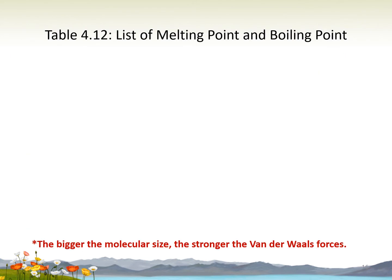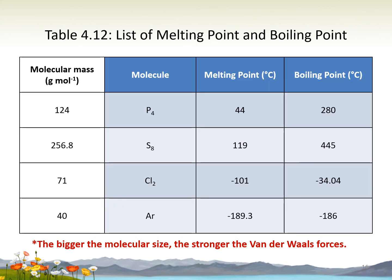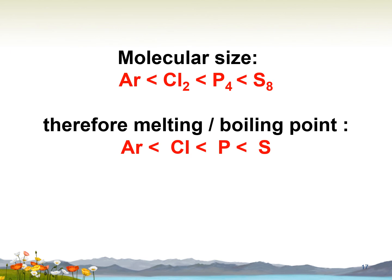The strength of Van der Waals forces depends on molecular size — the bigger the molecular size, the stronger the Van der Waals forces. Molecular size is determined by molecular mass. From the table, sulfur (S8) has the highest molecular mass and therefore the strongest Van der Waals forces, giving it the highest melting and boiling point. The molecular size increases in the order: Ar, Cl2, P4, S8. Therefore, melting and boiling point increases from argon to chlorine, phosphorus, and sulfur.